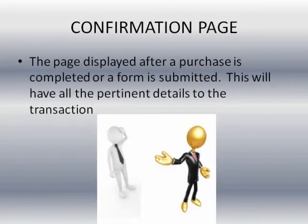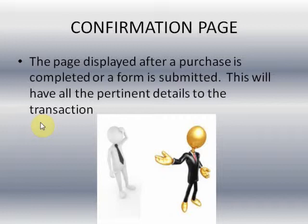Confirmation page: basically, this is the page that the site visitor is going to see once he completes the form. So if you're doing an email submit, after the email is entered and they hit enter, they're going to get taken to a confirmation page. Or if they're completing a sale, they'll always go to a confirmation page. It's very important that you have these — without them, it really is not very effective.